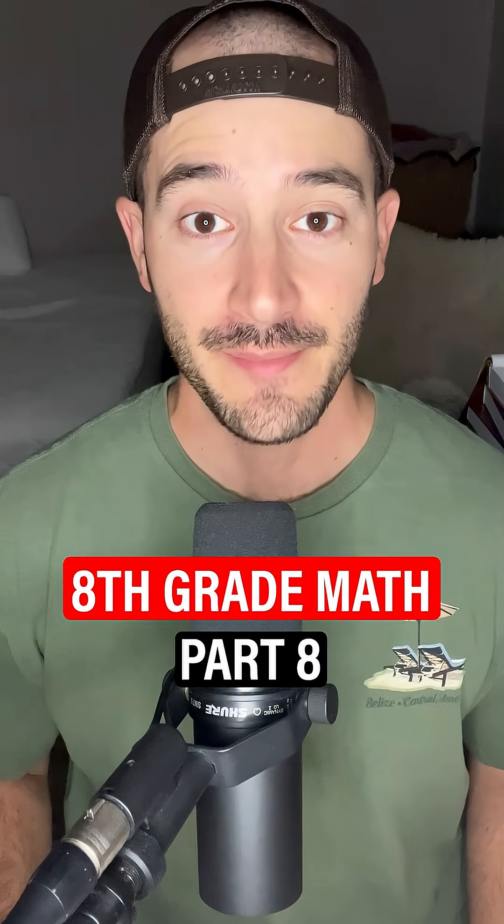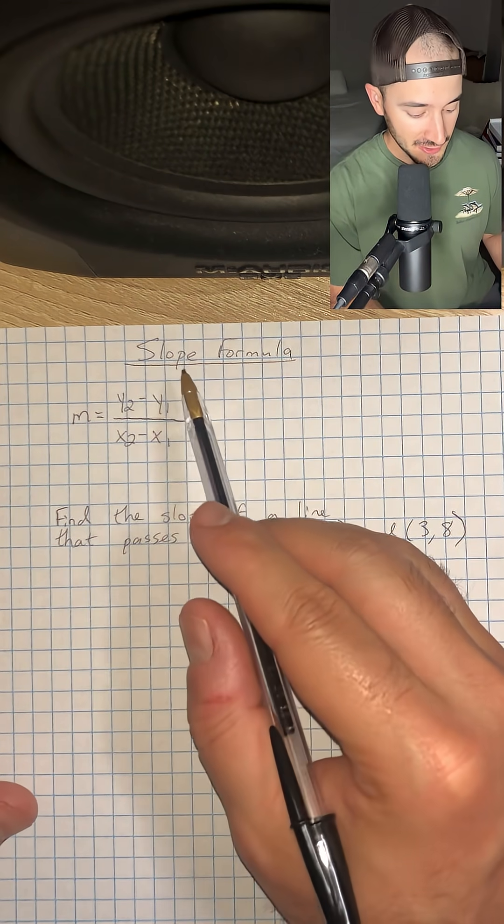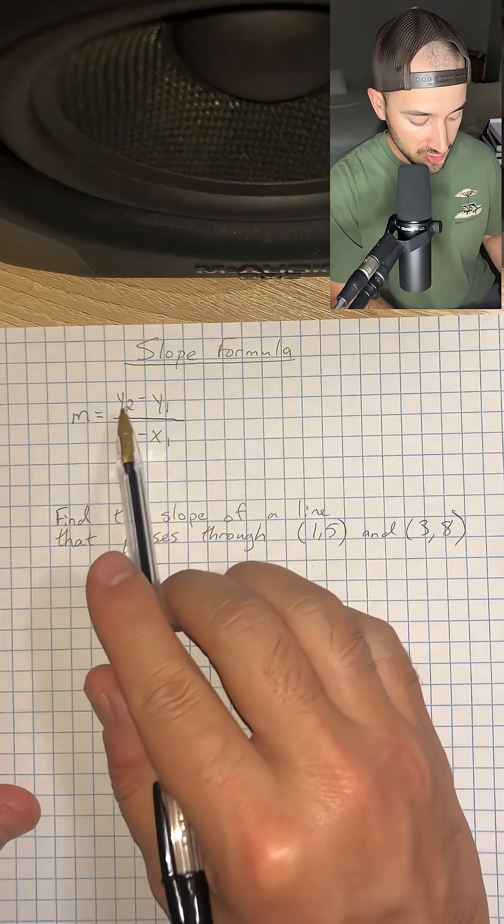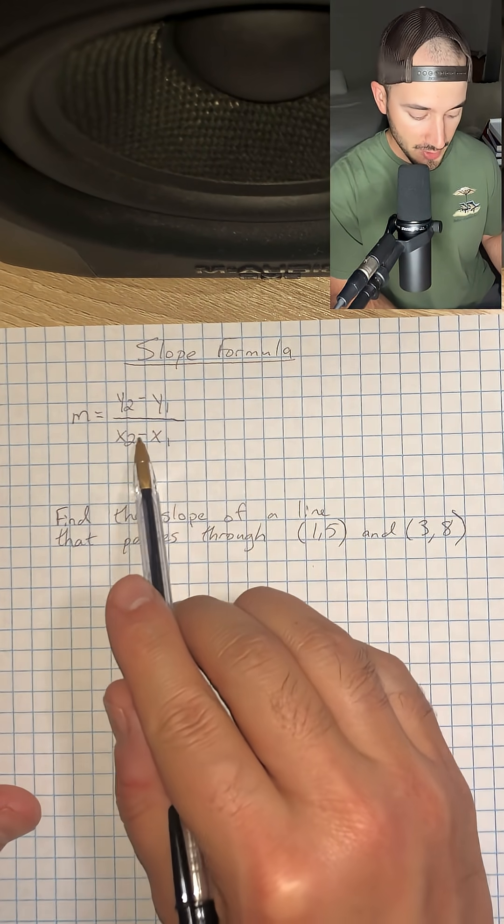This is everything you need to know for eighth grade math part eight. So we're talking about the slope formula, and the slope formula is just M, which stands for slope, equals y2 minus y1 over x2 minus x1.